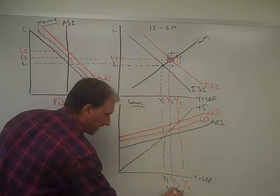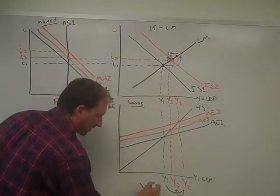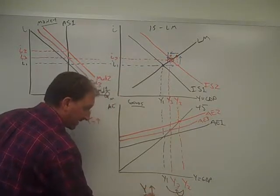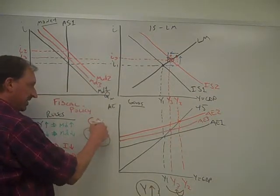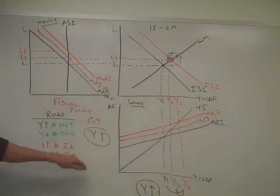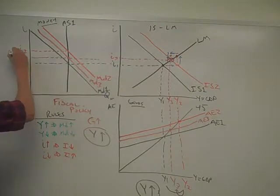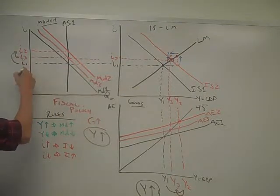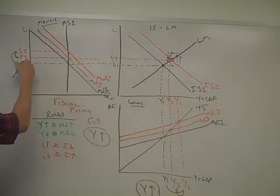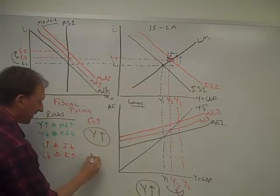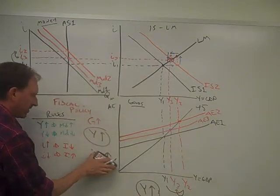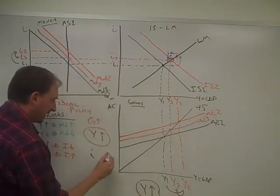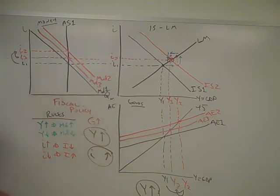Y goes from there to there. So Y goes up from Y1 to Y3, definitely up. That was the whole reason why we did this anyway. G goes up, so Y goes up, but we're going to pay a price for it. Y goes from I1 to I2, back down to I3, but I3 is still higher than I1, so at the very end of this story, interest rates are up. So that's what you get.